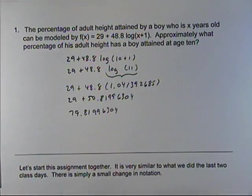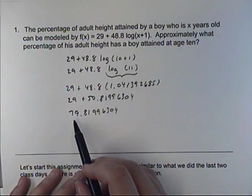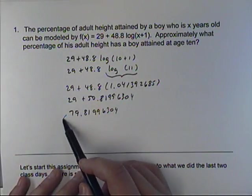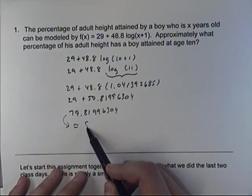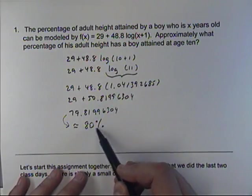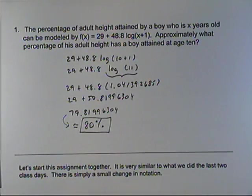Okay, now, it says approximately what percentage of his adult height has he attained. Well, I'm going to round that off to the nearest percent. 79.8 is approximately 80%. So, a 10-year-old boy has achieved 80% of what his adult height would be.